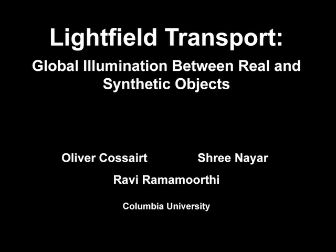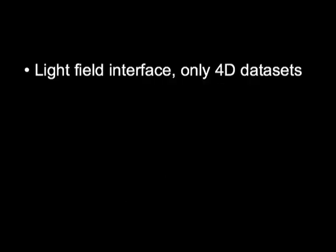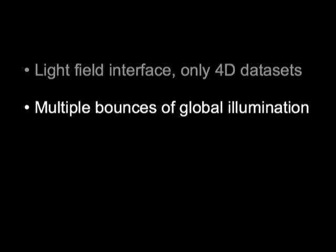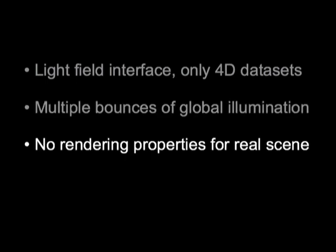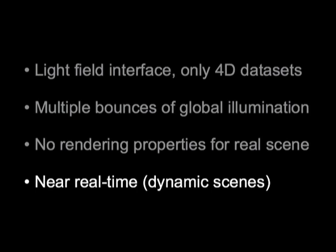We present a new image-based method called Light Field Transfer for compositing real and synthetic objects in the same scene with near field lighting. By using a light field interface which requires only 4D datasets, we provide multiple bounces of global illumination without the need for a model of the rendering properties of real objects. We can support dynamic scenes because our method can be performed in near real time.